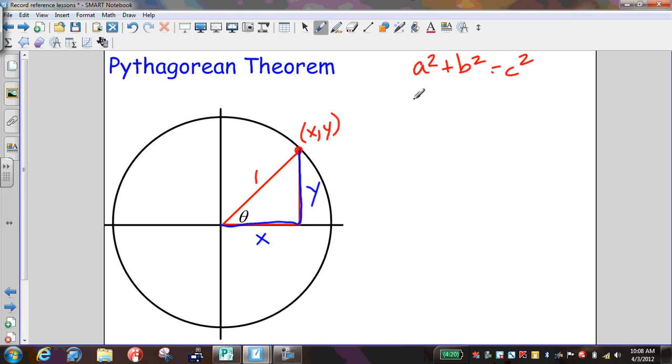So if I substitute those in here, I could simply say x squared plus y squared is equal to 1 squared.